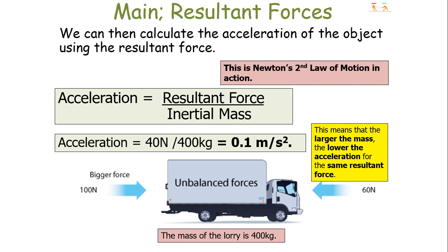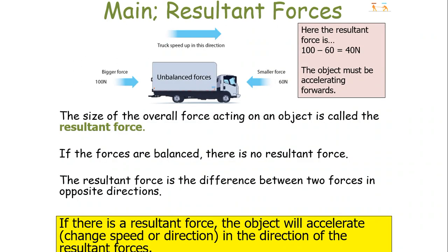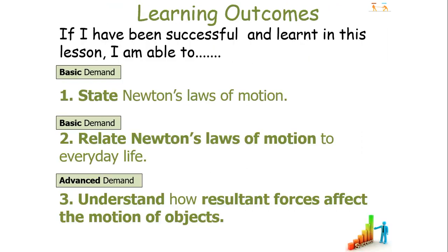This fundamentally means that the larger the mass of an object, the lower the acceleration for the same resultant force. To clarify once more: if forces are balanced there is no resultant force; if there is a resultant force, the object will accelerate — changing speed or direction — in the direction of the resultant force. In this lesson we have learnt to state Newton's Laws of Motion, relate them to everyday life, and understand how resultant forces affect the motion of objects. Thank you very much for listening to this lesson on resultant forces.